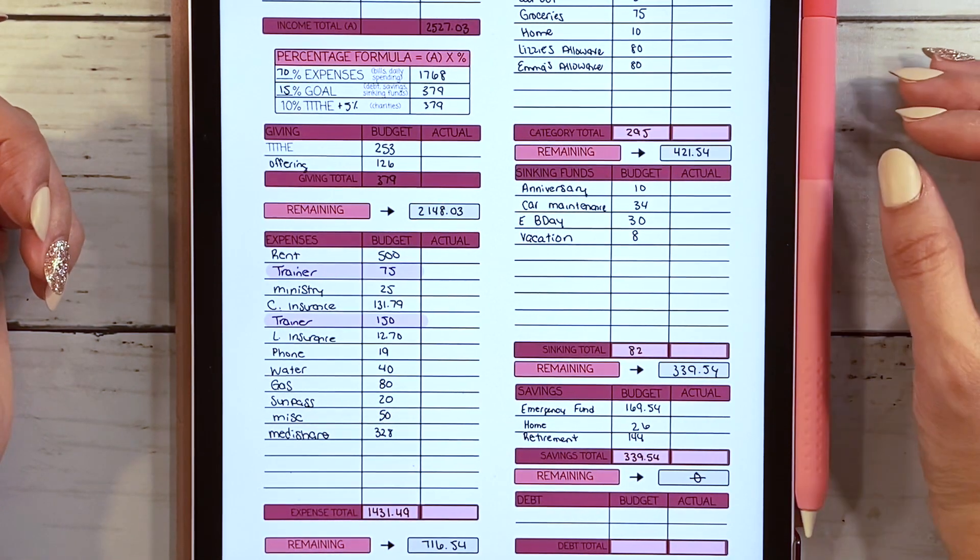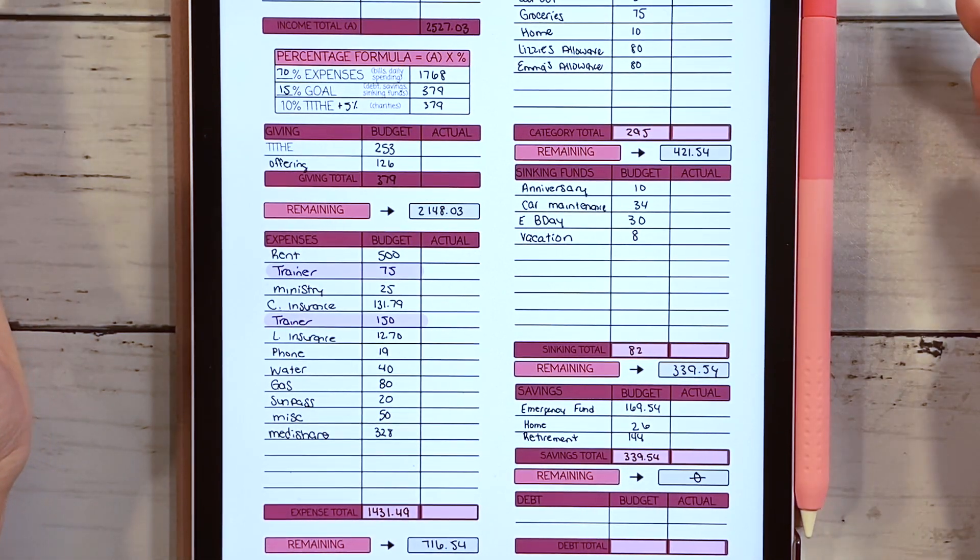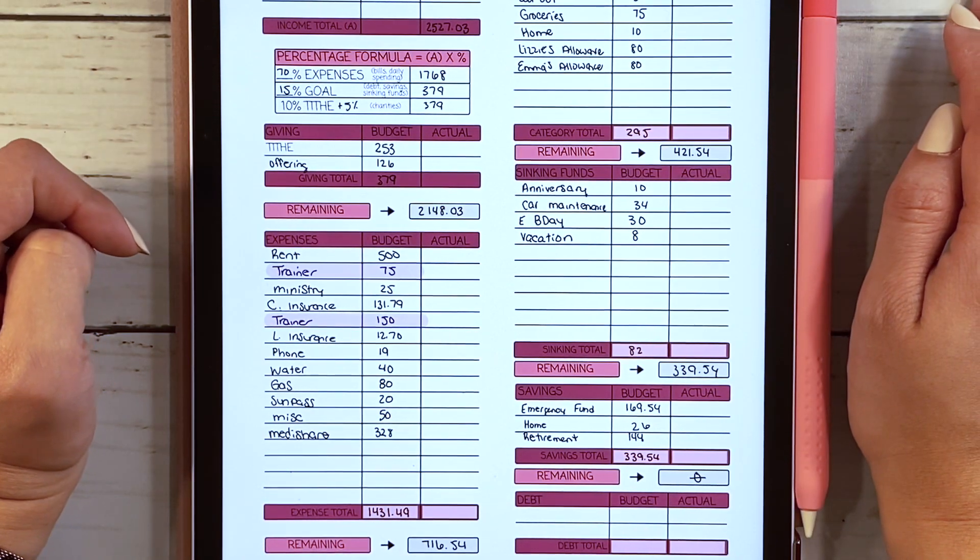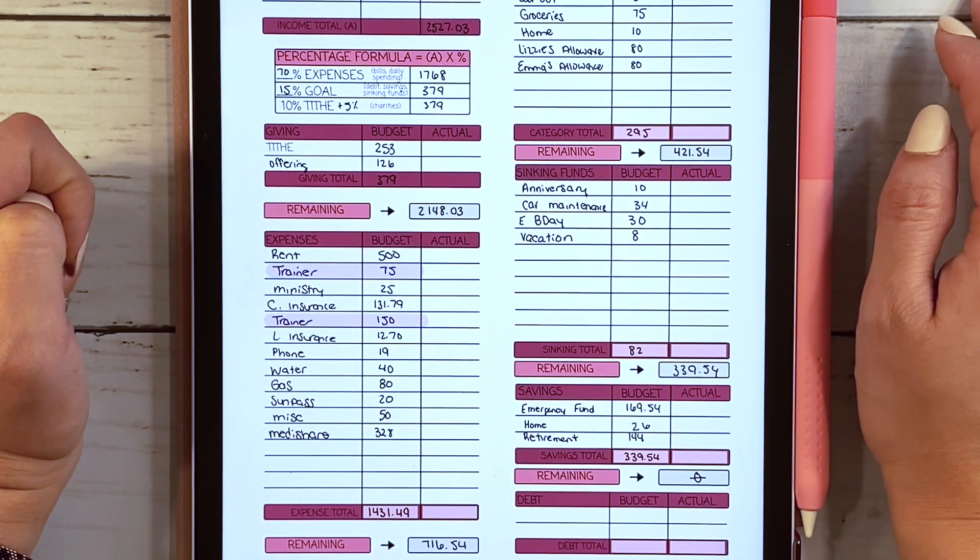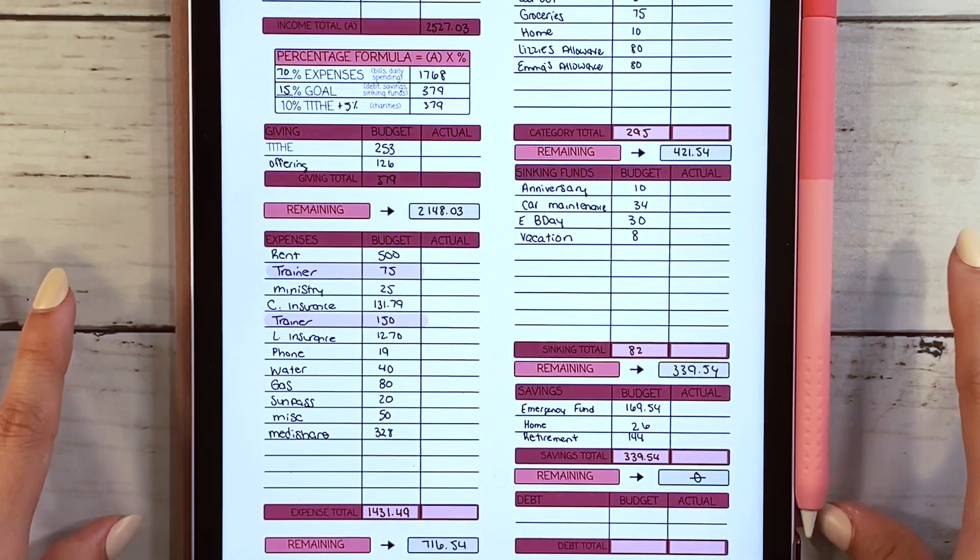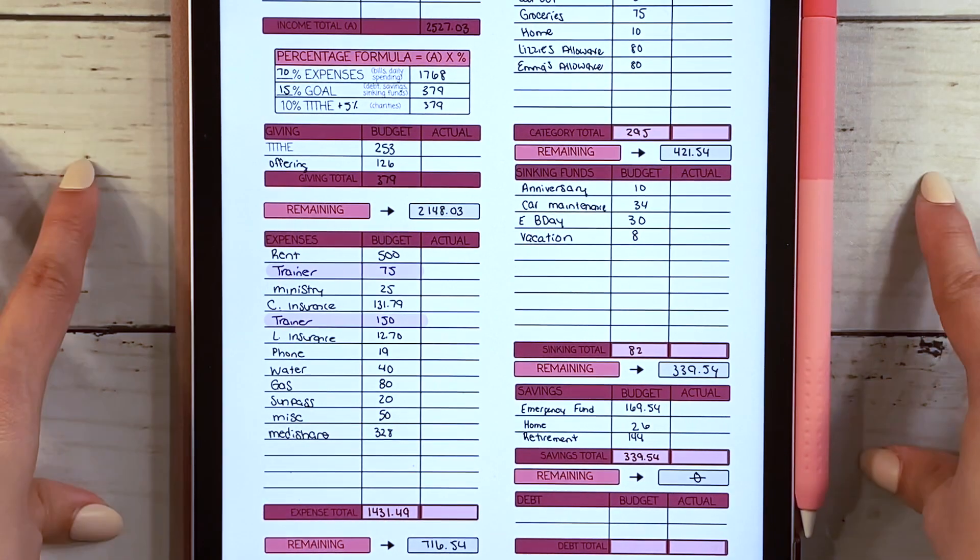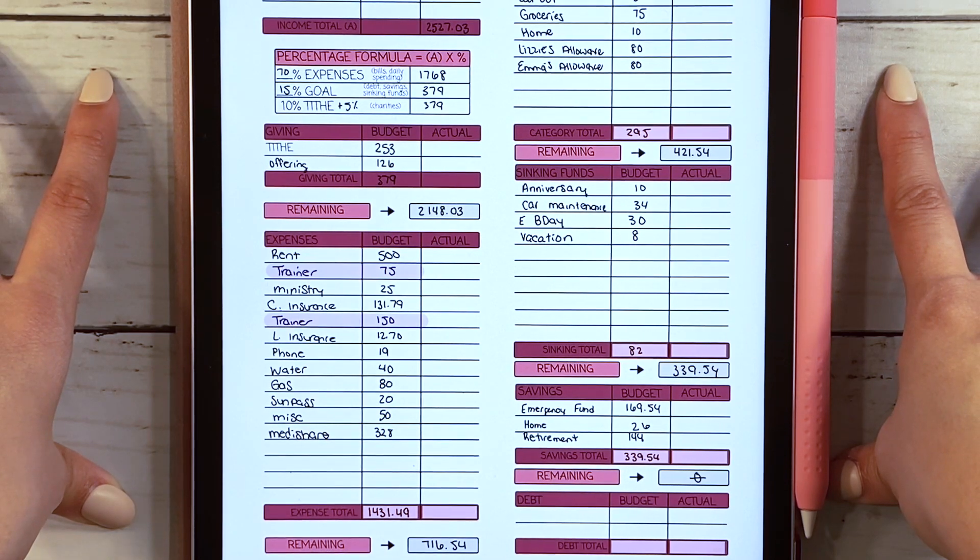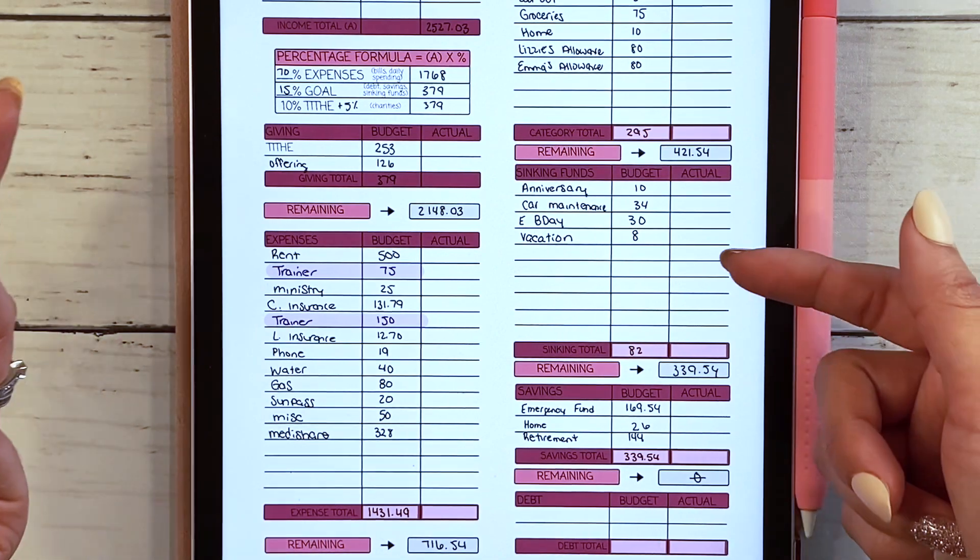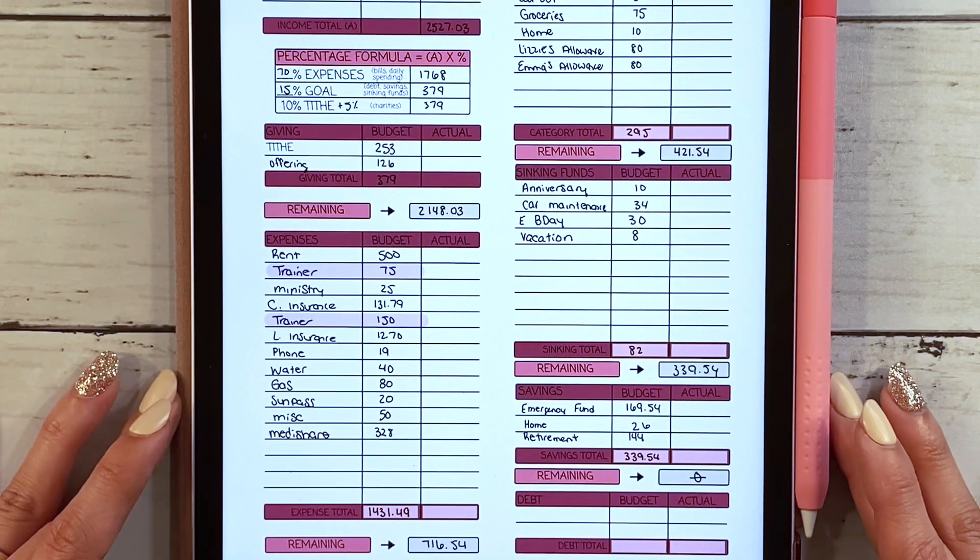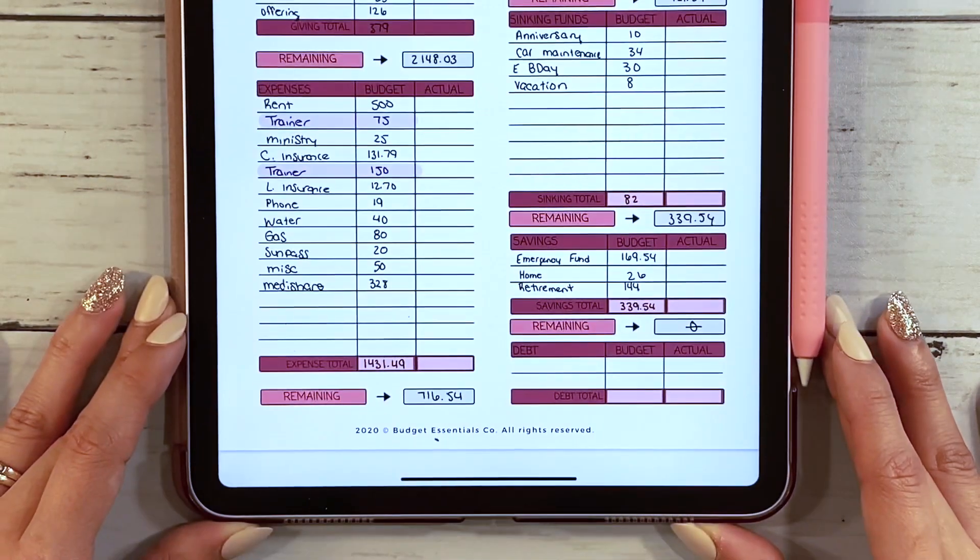Now let's move on to our goals. We have specific sinking funds that we want to save for. One of them is our anniversary. We want to continue putting funds to our car maintenance. My husband's birthday is this month so I want to still contribute to that because we have a certain dollar amount goal for his birthday, and then vacation. Yes, we're putting in a small amount for a couple of these, but something is better than nothing. Total that we are putting for our sinking funds is $82.